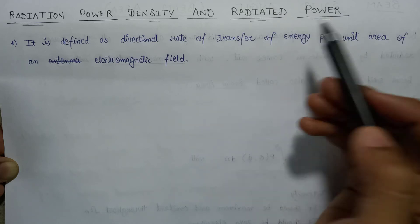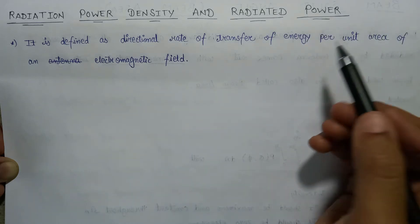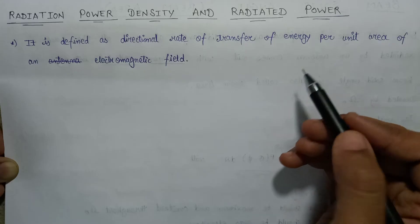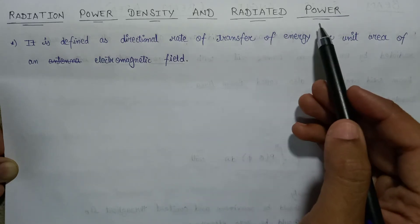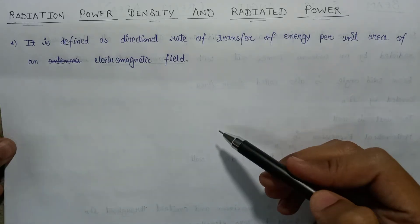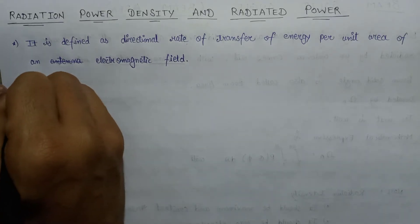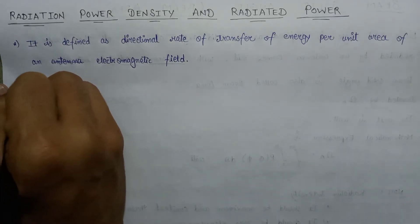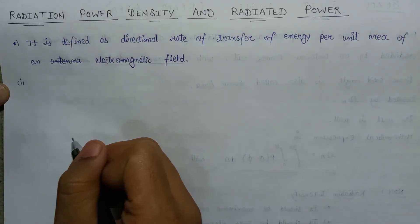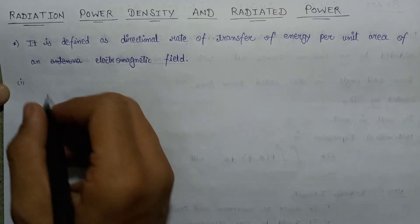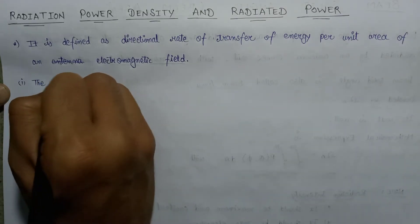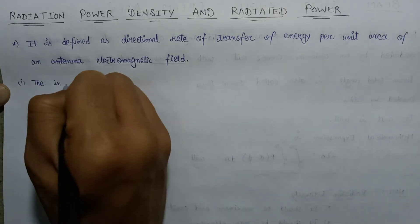Now let us have a look at the radiated power, or the power radiated by an antenna. We will derive the mathematical expression for the radiated power of an antenna in a stepwise manner. The first step involves the Poynting vector, so the instantaneous Poynting vector is given as: